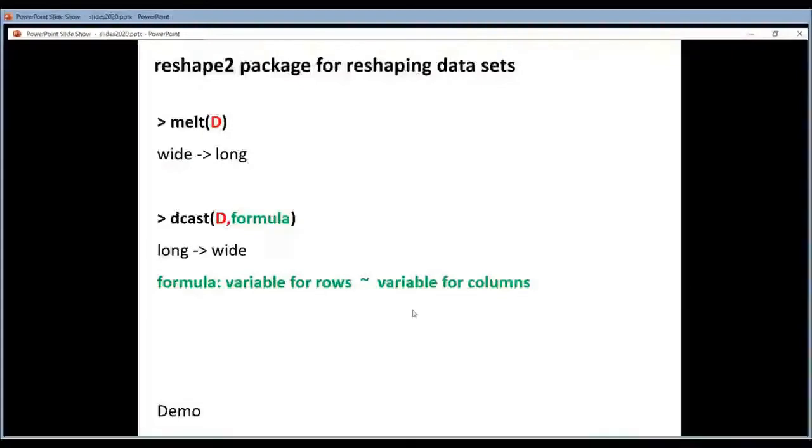just like every formula in R it contains a tilde. So what comes in front? The variable, the name of the column in the data frame that will be used for the rows in the wide format. What comes after the tilde? The variable, the name of the column in this data frame that will be used to make the columns. It will become more clear if I show it.